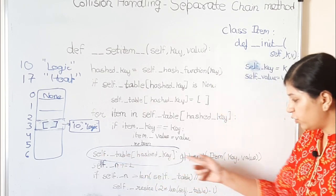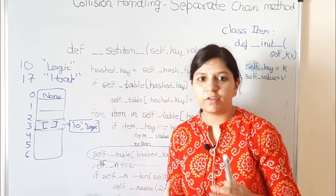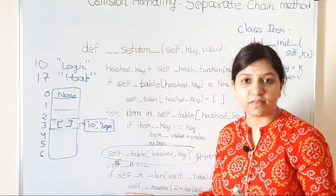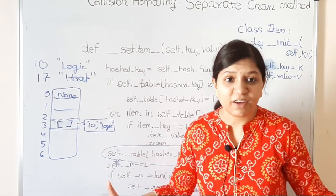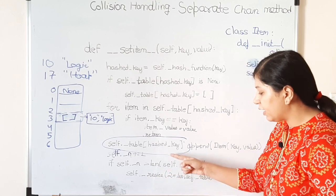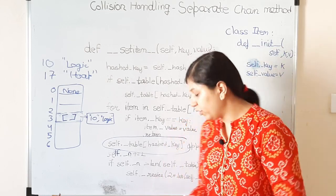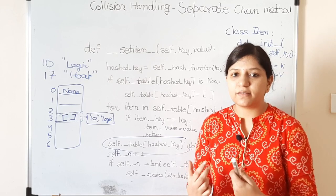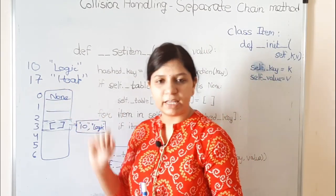Since the list was just created and has nothing, the loop over it won't run. We directly append a new Item(10, 'logic') to that list. After appending, we increase the input size by 1 to track the load factor. Then we check: if input_size > len(hash_table) / 2, we resize the hash table. The new capacity is 2 * capacity - 1, which keeps the capacity close to a prime number — that's why we use two times capacity minus one.